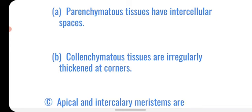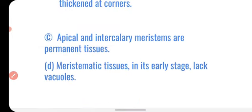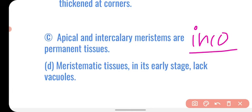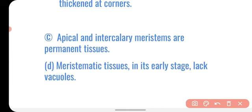The third statement is: apical and intercalary meristems are permanent tissues. Meristems are NOT permanent tissues, so this is the incorrect statement. The fourth statement — meristematic tissue in its early stage lacks vacuoles — is correct, as meristematic cells do not have vacuoles. So the answer is option three.